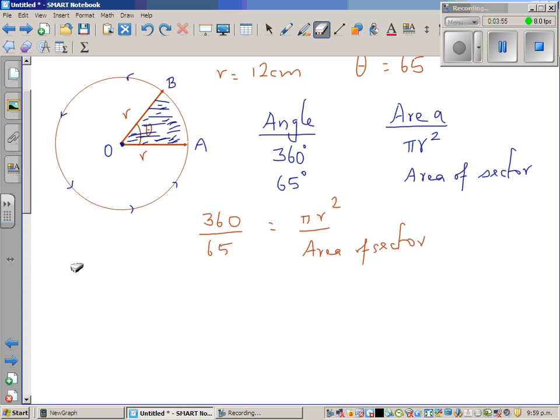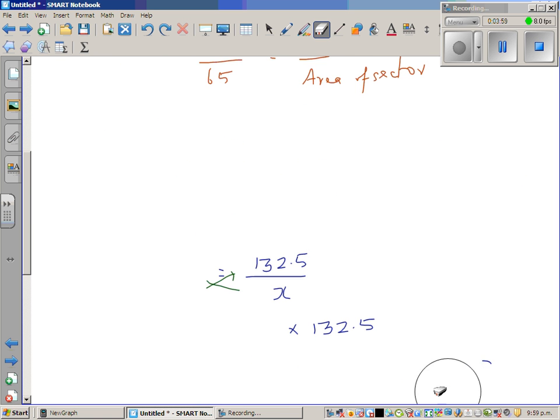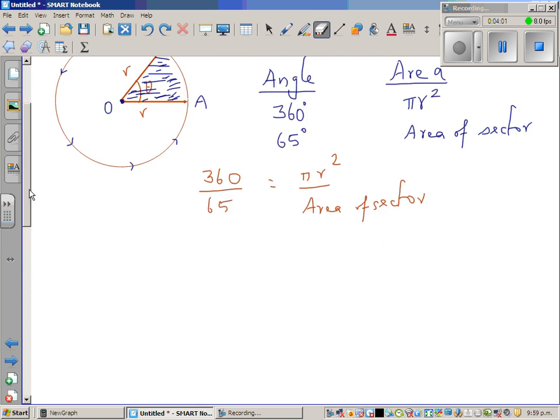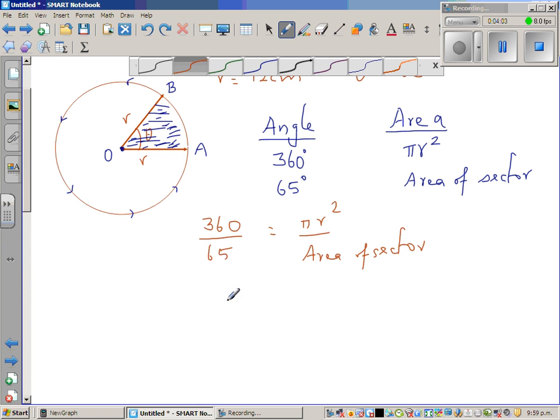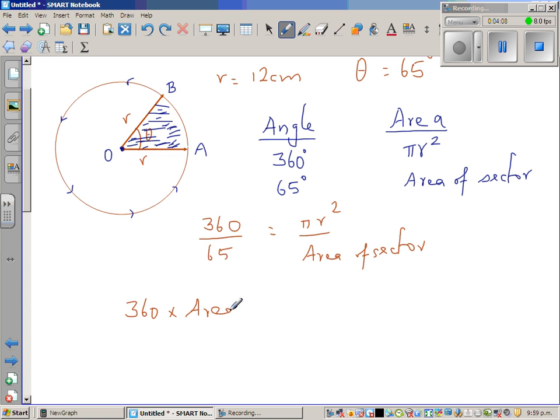Let us cross multiply. So area of sector, let us cross multiply. When you cross multiply, 360 times area of sector equals π times 12 squared. r is 12, so in place of r I'm putting 12 squared, times 65.